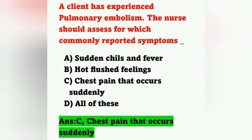Pulmonary embolism involves formation of a thrombus or blood clot, most commonly in a deep vein, which travels to the right side of the heart and gets lodged in the branches of the pulmonary artery. Signs and symptoms include restlessness, blood-tinged sputum, and chest pain — the most common symptom. Other signs include crackles, cyanosis, distended neck veins, dyspnea, hypotension, shallow respiration, tachypnea, and tachycardia.